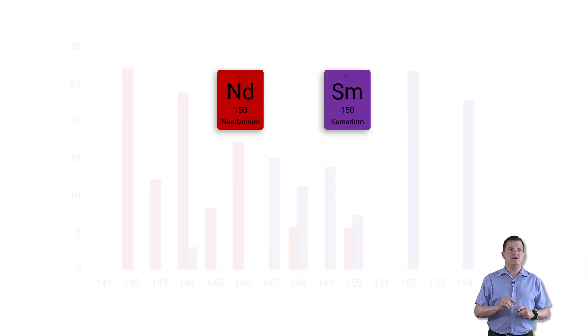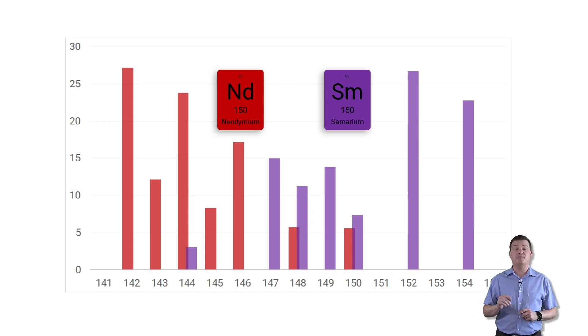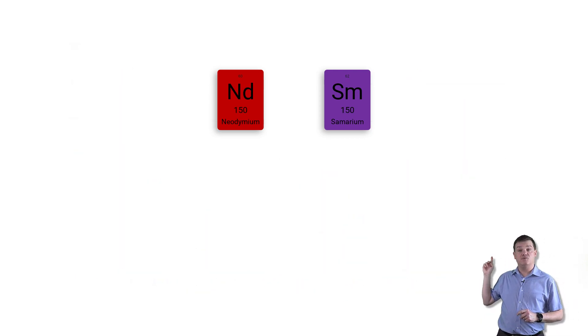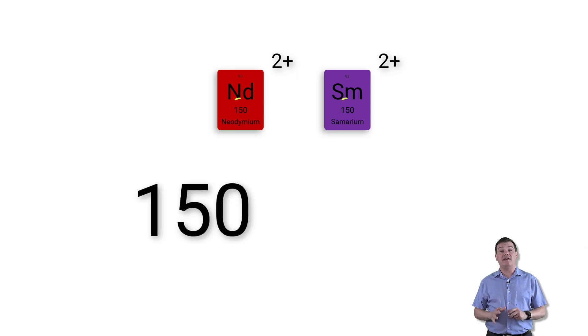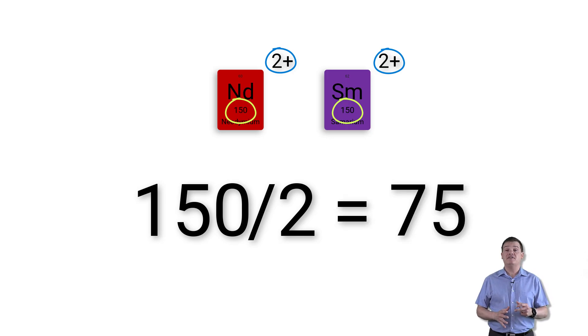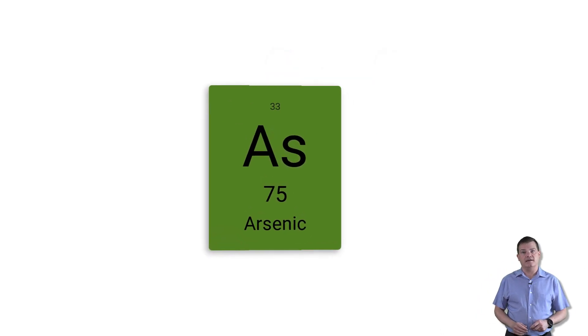Now both neodymium and samarium have an isotope at mass 150. If the neodymium and samarium atoms lose two electrons in the plasma they'll form ions with a two plus charge. A quadrupole separates ions by their mass to charge ratio so a doubly charged ion appears at half of its true mass, that is mass 75, the same mass as arsenic.